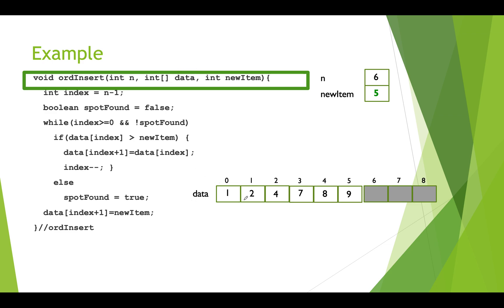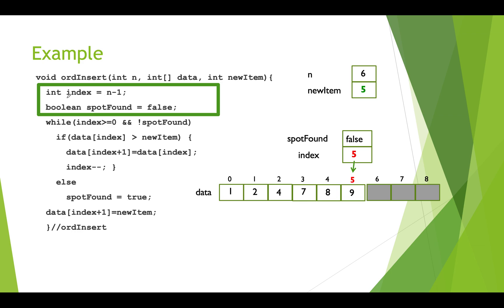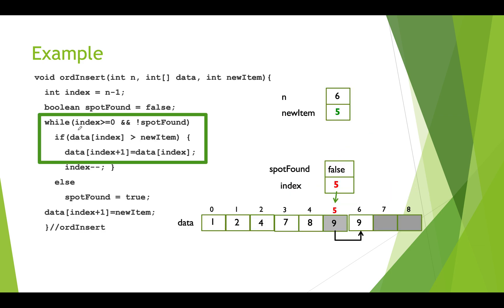Let's go through an example. We enter the insert method with n equal to 6, because there are six filled slots in this array. Data is our pointer to the array, and new item — the value we want to insert — is 5. We create a local variable index set to n minus one, which is 5, pointing at the last filled slot. We set spotFound to false because we haven't yet found the spot. We check the loop condition: index is 5, which is greater than or equal to zero, and spotFound is false, so the loop runs.